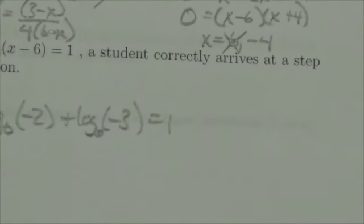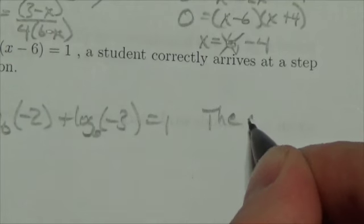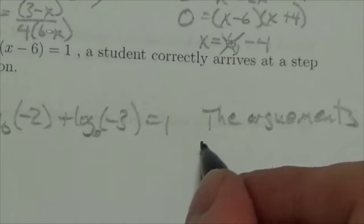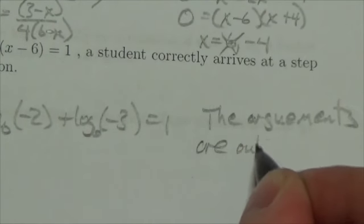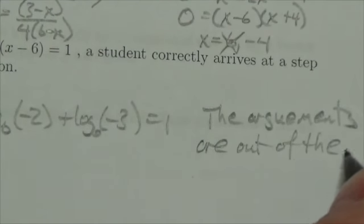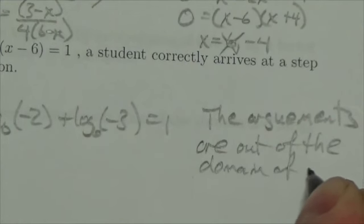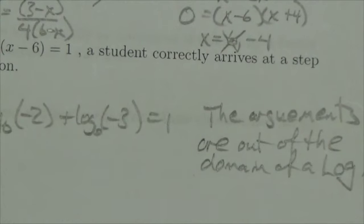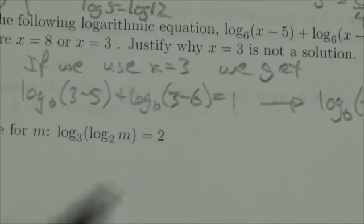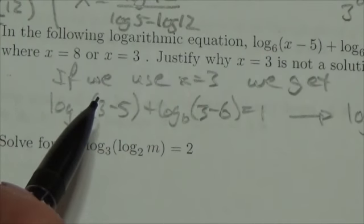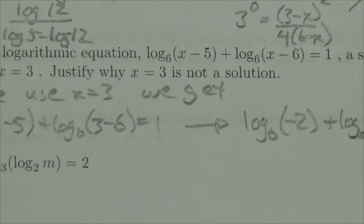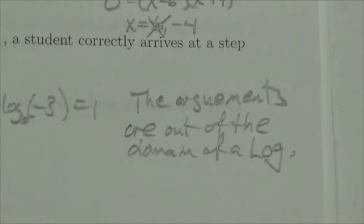The arguments here are out of the domain of a log — you can't take the log of a negative number. That's why x equals 3 doesn't work. But x equals 8 works because 8 minus 5 is 3 and 8 minus 6 is 2, and those are both positive values within the domain of the log.